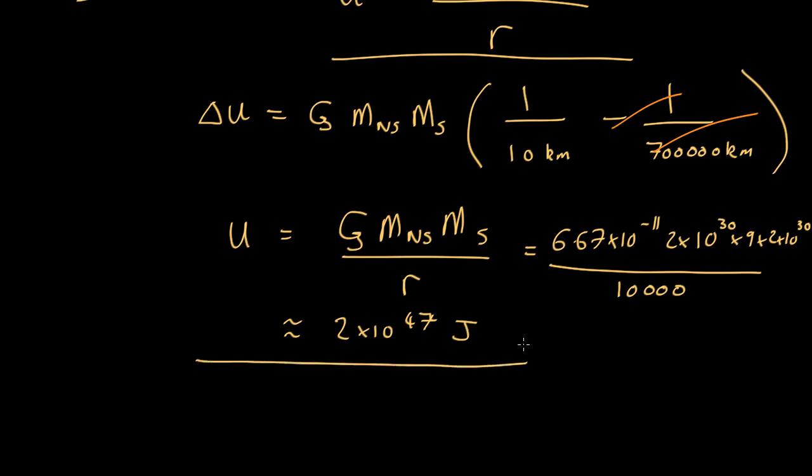Now, if you remember, the type 1a supernova we were talking about last time were only about 10 to the 44 joules, so we're talking about an absolutely staggering amount of energy here, a thousand times more than the already staggering energy of a type 1 supernova. A huge amount of energy.